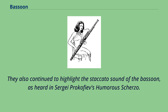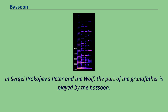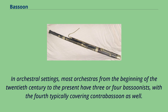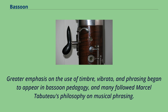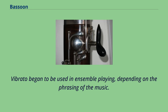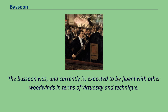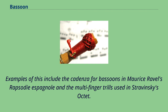In Sergei Prokofiev's Peter and the Wolf, the part of the grandfather is played by the bassoon. In orchestral settings, most orchestras from the beginning of the 20th century to the present have three or four bassoonists, with the fourth typically covering contrabassoon as well. Greater emphasis on the use of timbre, vibrato, and phrasing began to appear in bassoon pedagogy, and many followed Marcel Tabuteau's philosophy on musical phrasing. The bassoon is expected to be fluent with other woodwinds in terms of virtuosity and technique. Examples include the cadenza for bassoons in Maurice Ravel's Rapsodie Espagnole and the multi-finger trills used in Stravinsky's Octet.